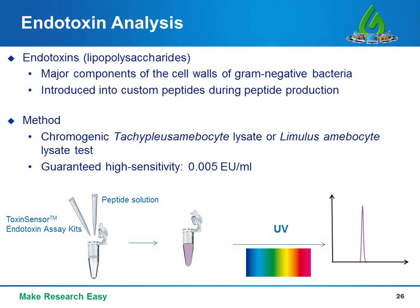Endotoxins, also known as lipopolysaccharides, are the major components of the outer membrane of gram-negative bacteria. Due to the absence of sterile clean-room conditions in the main production process, endotoxins are introduced into custom peptides during peptide production. We use the chromogenic Limulus Amoebocyte Lysate (LAL) method to test the final level of endotoxin in delivered custom peptides. GenScript provides endotoxin assay kits called ToxinSensor, where peptide samples are mixed with assay reagents and the amount of purple color reflects endotoxin levels.